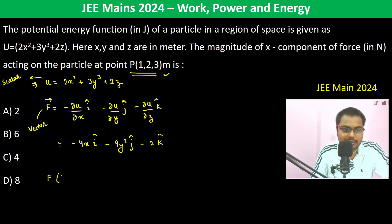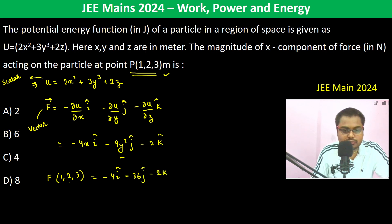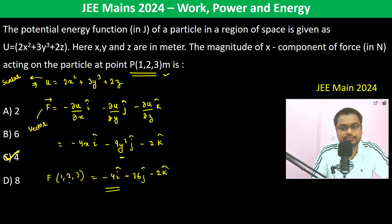Force at (1, 2, 3) is going to be minus 4 î — substituting x=1 gives minus 4 — minus 36 ĵ, and minus 2k̂. Therefore the x-component of the force is 4 newtons.